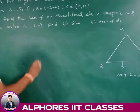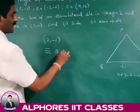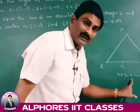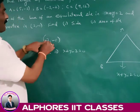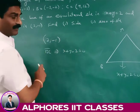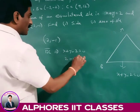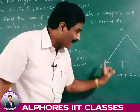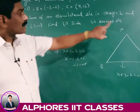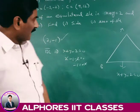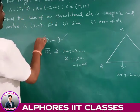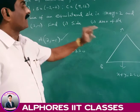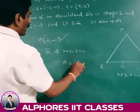One of the vertices is (2, -1). Substituting in x + y - 2 = 0: 2 + (-1) - 2 = -1 ≠ 0, so the point does not lie on the base. That means the given point must be the third vertex A = (2, -1). The base BC is x + y - 2 = 0, and both vertices B and C lie on this line.